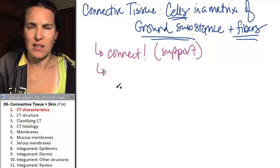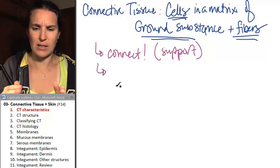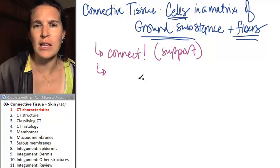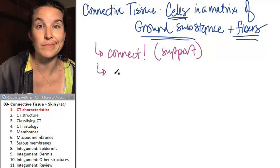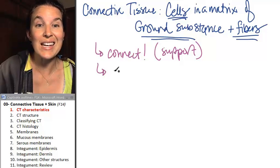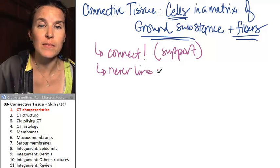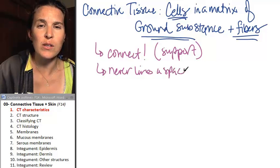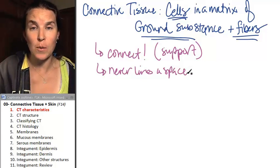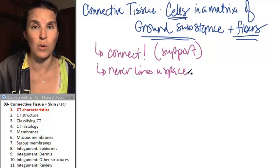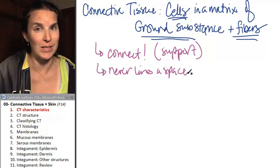If they connect two different things, is it possible that they line a space? They never line a space. Unless, of course, you get stabbed. In which case, then they will be lining spaces, but that wasn't on purpose.